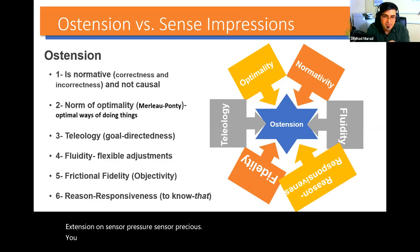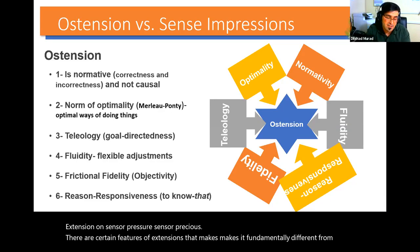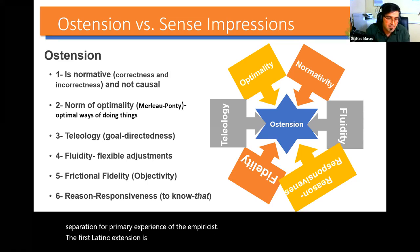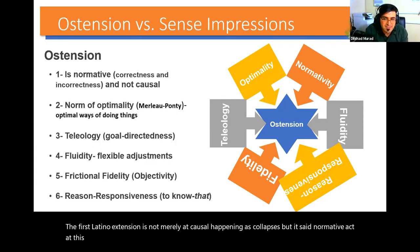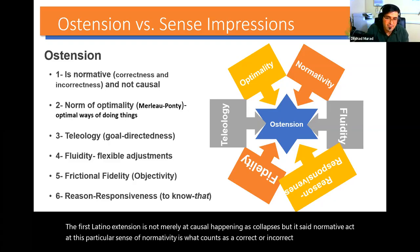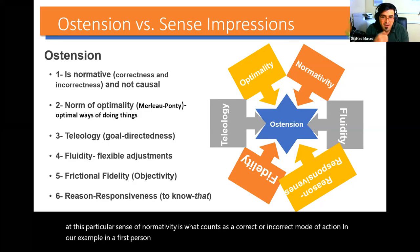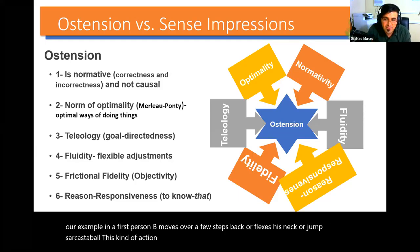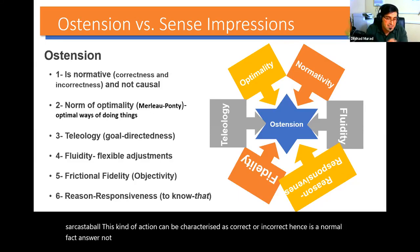There are certain features of ostensions that make it fundamentally different from sense impressions or primary experiences of the empiricists. The first is that ostension is not merely a causal happening, as Carnap says, but it is a normative act. This particular sense of normativity is what counts as a correct or incorrect mode of action. In our example, when person B moves a few steps back, flexes his neck, jumps, or catches the ball, this kind of action can be characterized as correct or incorrect — hence it is a normative act, not a purely causal regularity.